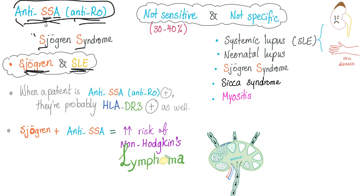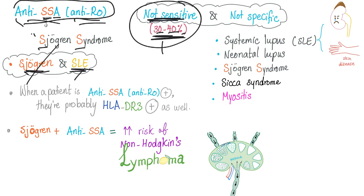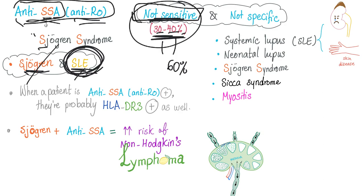Anti-SSA: Sjögren and lupus. It's not sensitive because it's only present in 30–40% of patients with Sjögren or lupus — so by definition this test is not sensitive. Is it specific? No, it's not specific either, because this test is positive in lupus, neonatal lupus, Sjögren syndrome, Sicca syndrome, and myositis. By definition it is not specific because it can be present in many diseases.